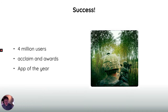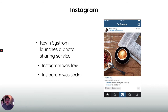Hipstamatic won app of the year awards, had four million users, lots of acclaim, and was even used by a photojournalist documenting his time serving in the US Army in Afghanistan. It was a real popular and cultural success. And then along came Instagram. Kevin Systrom launched a photo sharing service — they were actually developing another app when they came up with the idea — and Instagram was massively more successful than Hipstamatic. It was bought by Facebook for over one billion dollars, which at the time was considered ridiculous but now looks like a bargain.